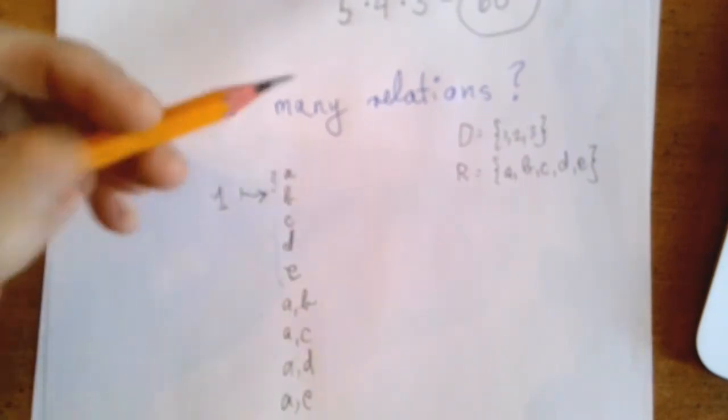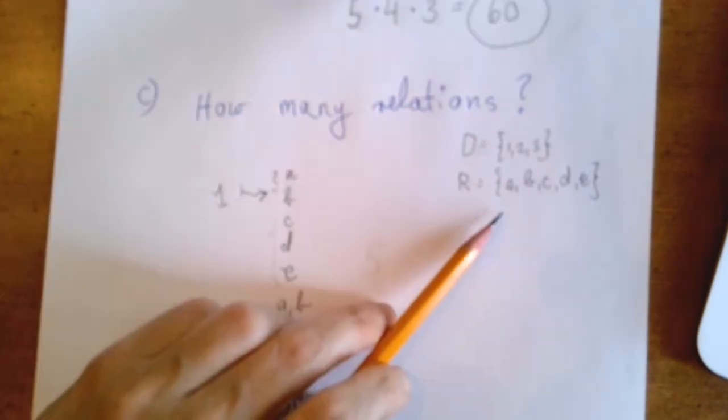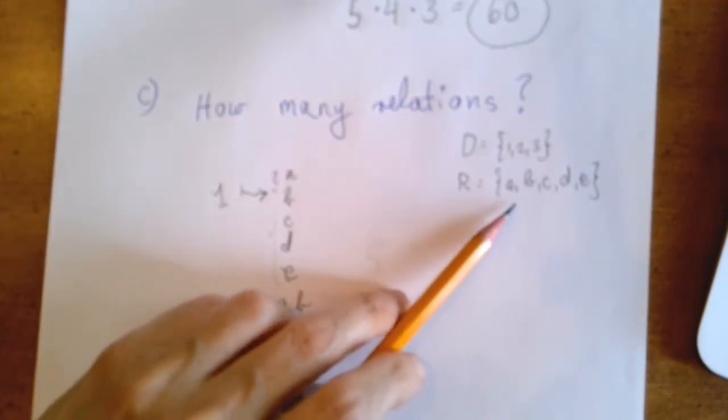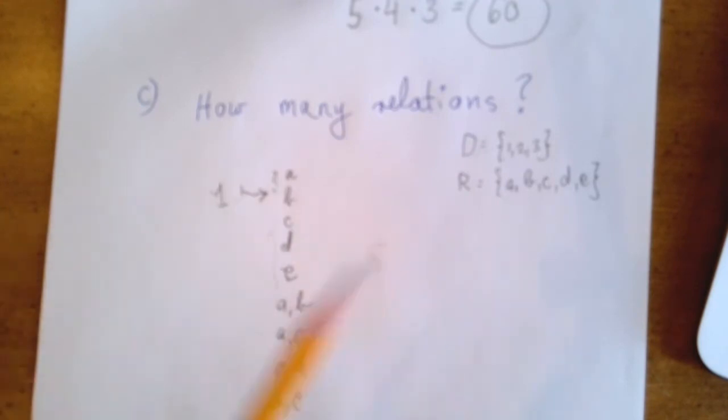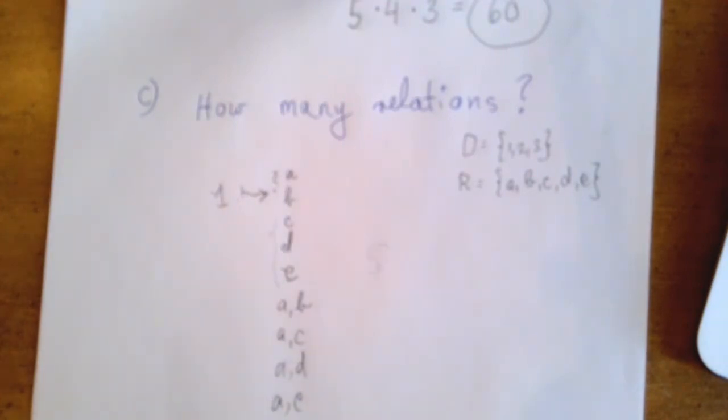To one, we can assign either just one letter, but we can also assign any subset. Well, almost any subset is good for the list of elements assigned to one. R has five elements. That means that R has 32 subsets.